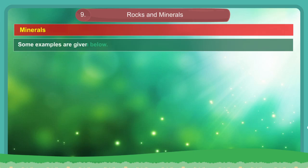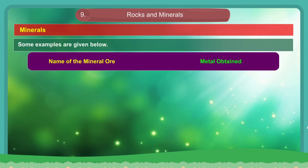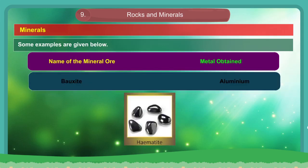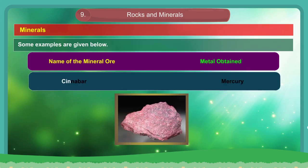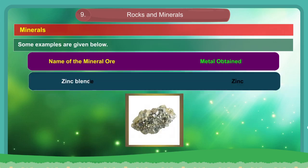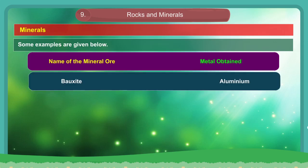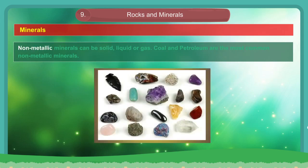Some examples of mineral ores and the metals obtained from them: Hematite yields iron; Bauxite yields aluminium; Cinnabar yields mercury; Zinc blende yields zinc; Ferrite yields copper. Non-metallic minerals can be solid, liquid or gas. Coal and petroleum are the most common non-metallic minerals.